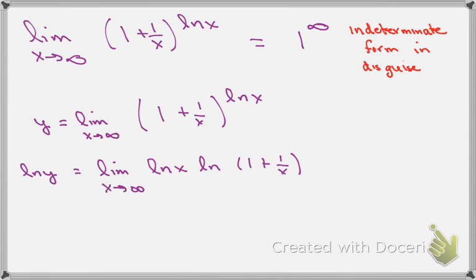We started with this limit as x goes to infinity of (1 + 1/x) to the power of ln x. Because the (1 + 1/x) term goes to 1 as x goes to infinity, and the natural log of x goes to infinity, that limit looks like 1 to the power of infinity. This is an indeterminate form in disguise, because the only time we can use L'Hôpital's Rule is when it's one of the indeterminate forms in a ratio.